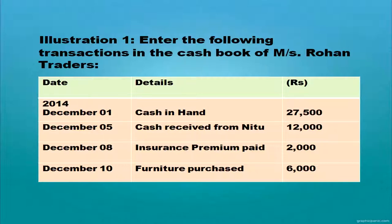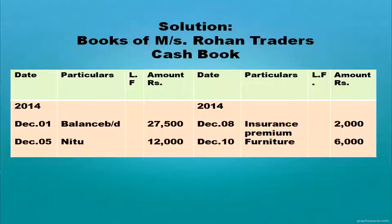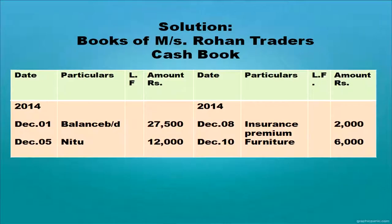Cash receipt from Neetu: entry will be cash account debit to Neetu. Insurance premium account debit to cash. Furniture account debit to cash. In the cash book, the opening balance is written with date and amount. Cash received from Neetu is posted on the debit side as 'To Neetu' with date and amount. Insurance premium paid is an expense posted on the credit side with date and amount.